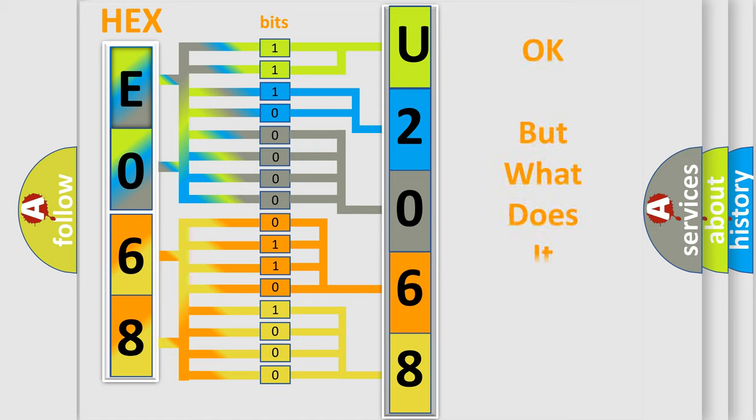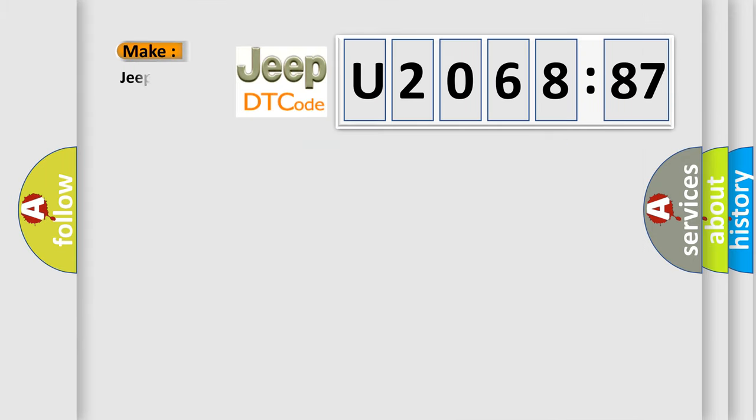We now know in what way the diagnostic tool translates the received information into a more comprehensible format. The number itself does not make sense to us if we cannot assign information about what it actually expresses. So, what does the diagnostic trouble code U206887 interpret specifically for Jeep car manufacturers?